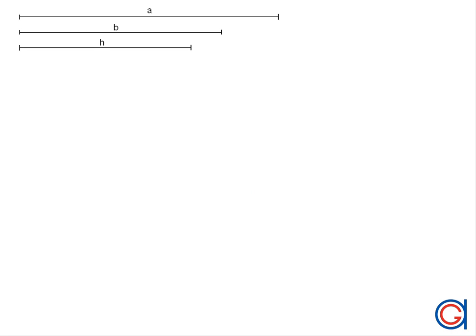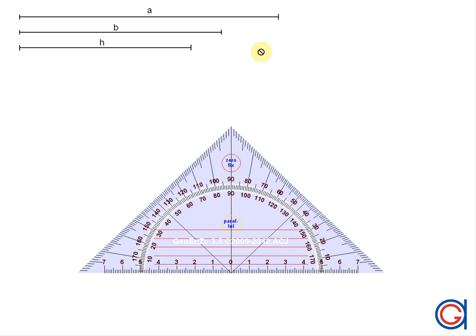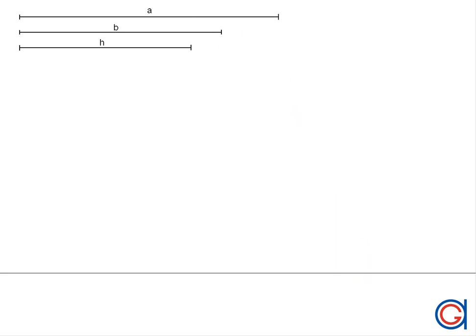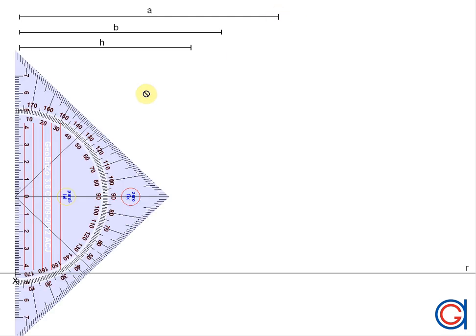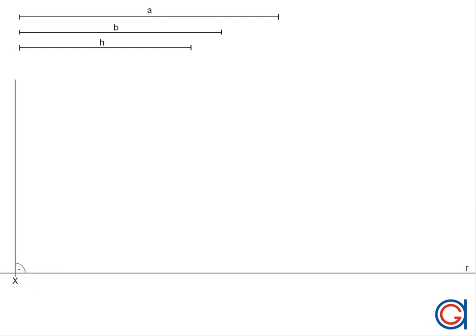The first thing we're going to do is draw a horizontal line at the bottom of the page or of our screen, as can be seen here, and we call this line R. Now on the left side of the line we will mark a point X, and we're going to draw a vertical perpendicular line array to this point X as shown here, and we will mark it with the symbol of 90 degrees.